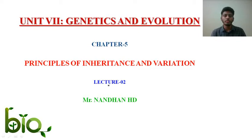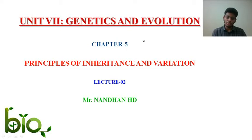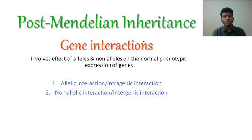By now you all know that according to Mendel, if a character has to pass from parent to offspring it follows a particular ratio — the monohybrid and dihybrid ratios. But when other scientists studied inheritance patterns in other organisms, they surprisingly found that the ratios were coming out different. These inheritance patterns where ratios differ from Mendel's are called deviations from Mendelian principles, or post-Mendelian inheritance.